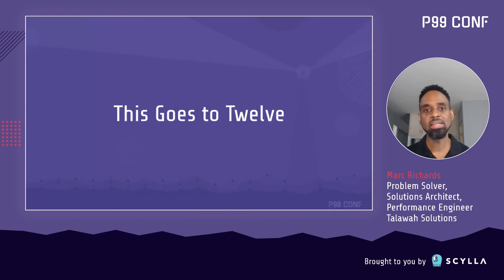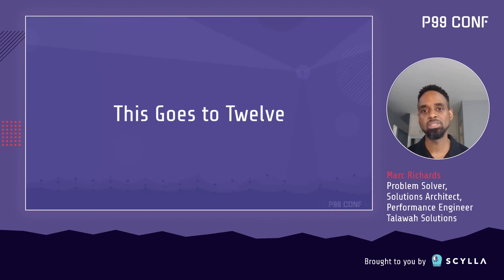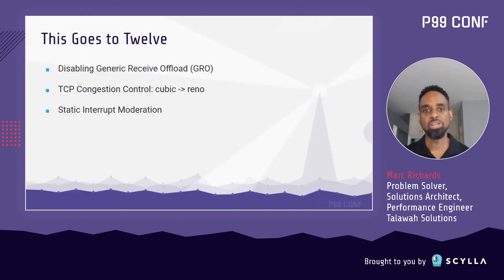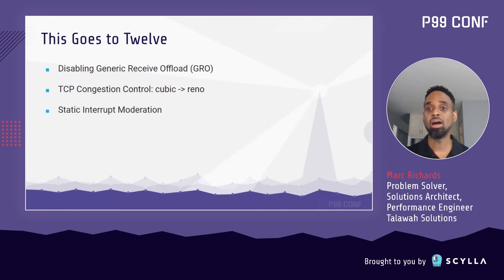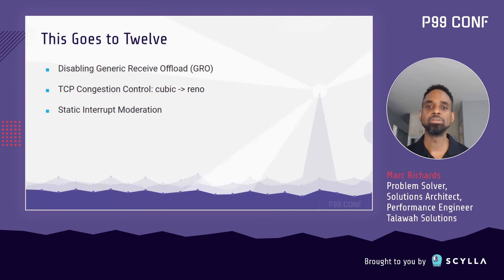I categorize this final group of networking optimizations as small improvements that help squeeze out the last drop of performance, even though they negatively impact other common use cases. First we have generic receiver offload, which is used to aggregate packets and reassemble them before they get to the userland application. For this benchmark, I know that all requests can fit in a single packet, so I just disabled GRO.